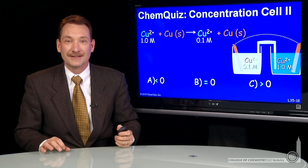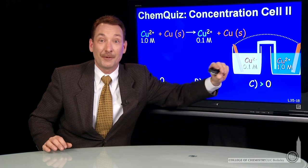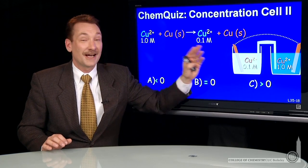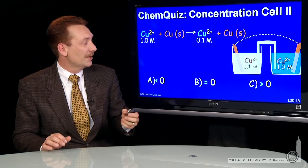The concentration would equalize. So intuitively, we know the concentration here of copper ions will decrease, and the concentration here will increase. But how does that correspond to a cell potential?